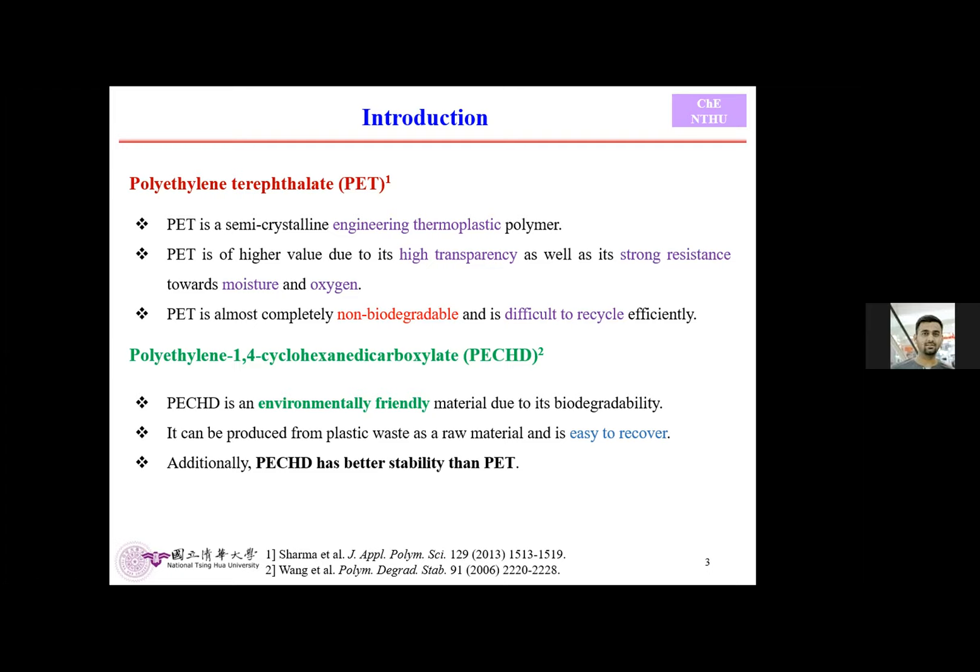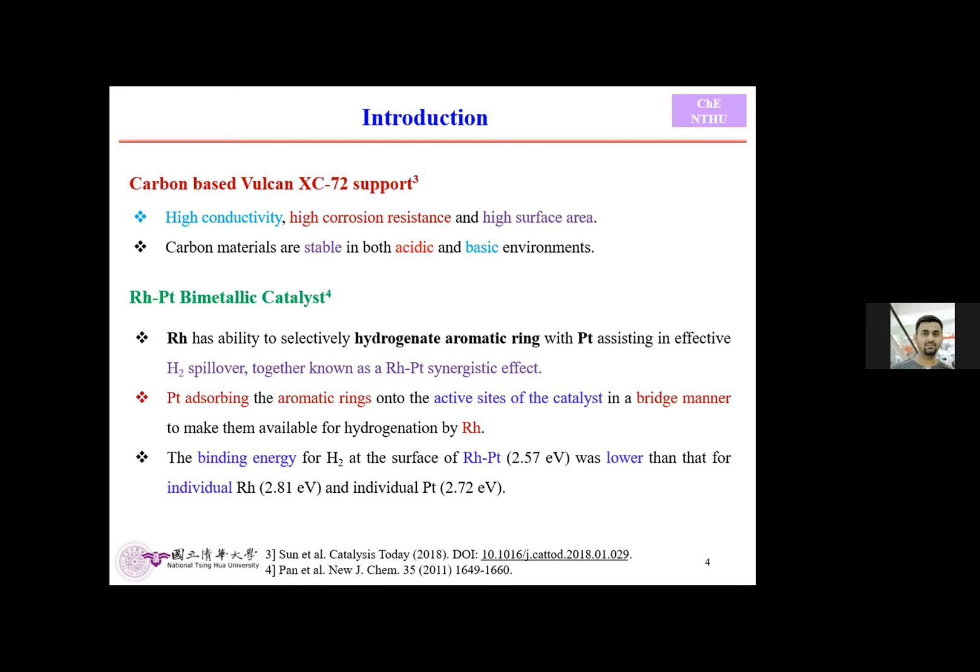After selective hydrogenation of the aromatic ring, PET becomes an environmentally friendly polymer. It has many applications including medical devices and others, with better stability compared to the parent material. My work is completely focused on heterogeneous catalysis for this transformation.